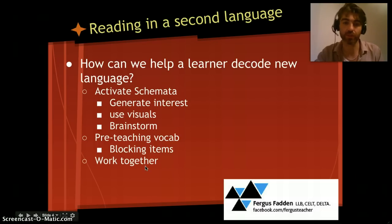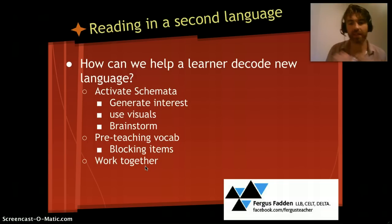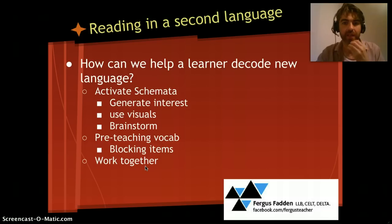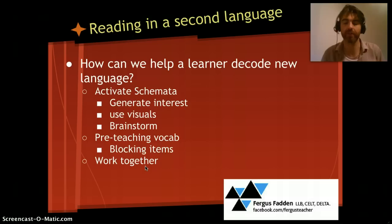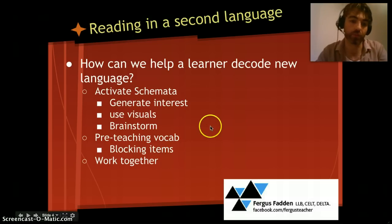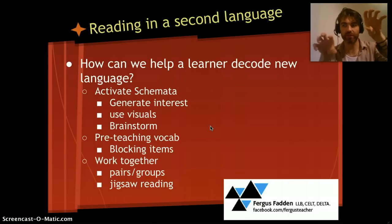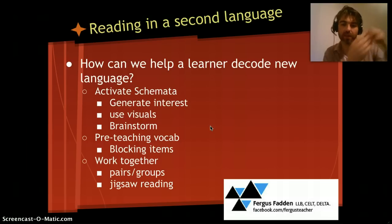We can also ask students to work together, involving lots of interaction — pairs and groups sharing ideas, checking in pairs after reading for gist, then checking again after reading for specific information, before checking answers with the whole group. This sharing of ideas and referring to the text promotes peer learning so you don't become the sole purveyor of knowledge. There's also jigsaw reading: one student reads one part of a text and another student reads a different part, so they need to come together to answer the questions.